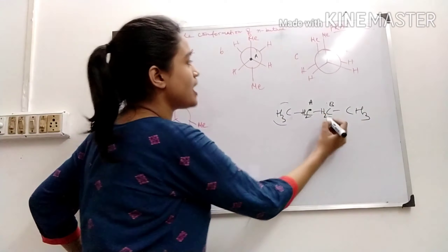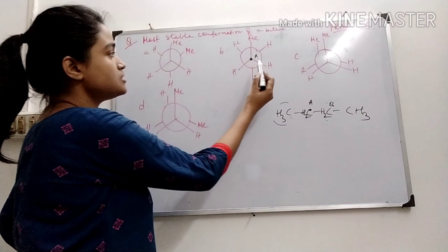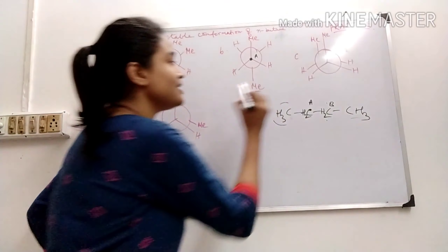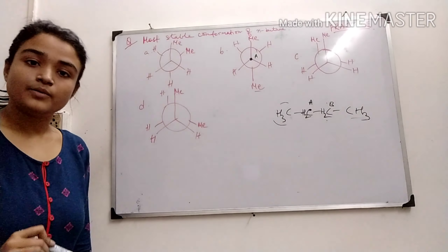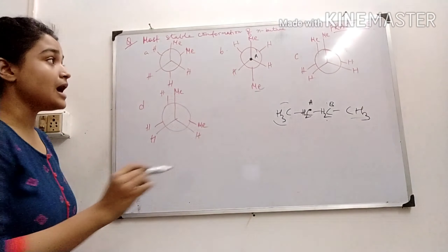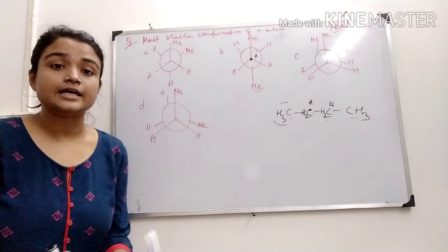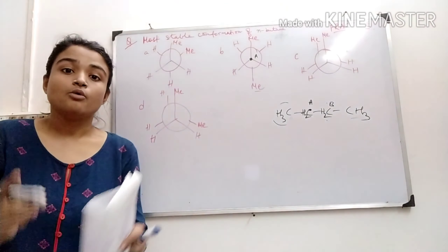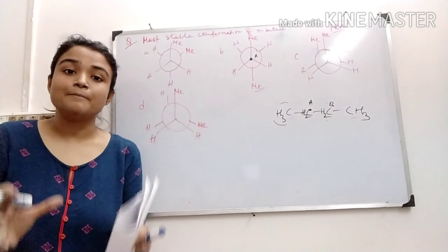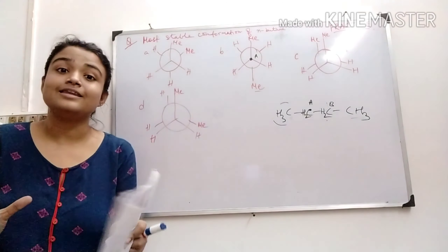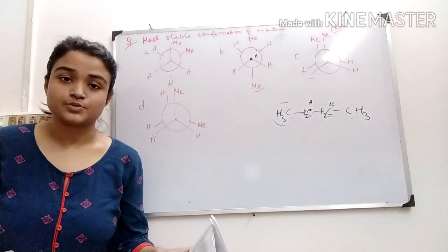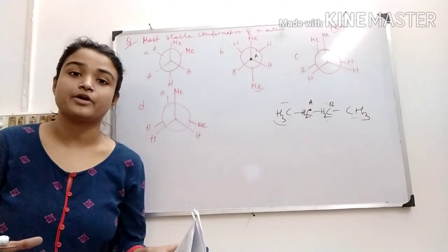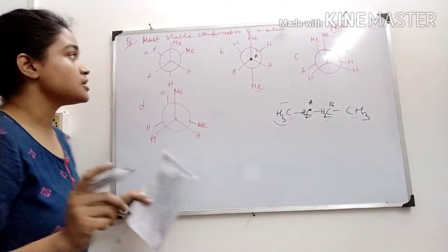B carbon also has two hydrogens and one methyl group. Now we have to see that conformation where the methyl groups are at a larger distance — when the two methyl groups are separated at a larger distance.